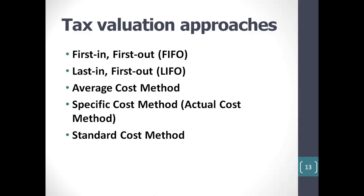There's also the average cost method, which identifies the value of inventory and the cost of goods sold by calculating an average unit cost for all goods available for sale during a given period of time. That valuation method assumes that the ending inventory consists of all goods available for sale. There's also the specific cost method, sometimes called the actual cost method, where an organization has software sophisticated enough to track the cost of an item from the time it arrives until it's used up or sold. And there's the standard cost method used in manufacturing for internal accounting purposes, where an organization simply sets a standard cost price for an item internally, regardless of what it actually cost.